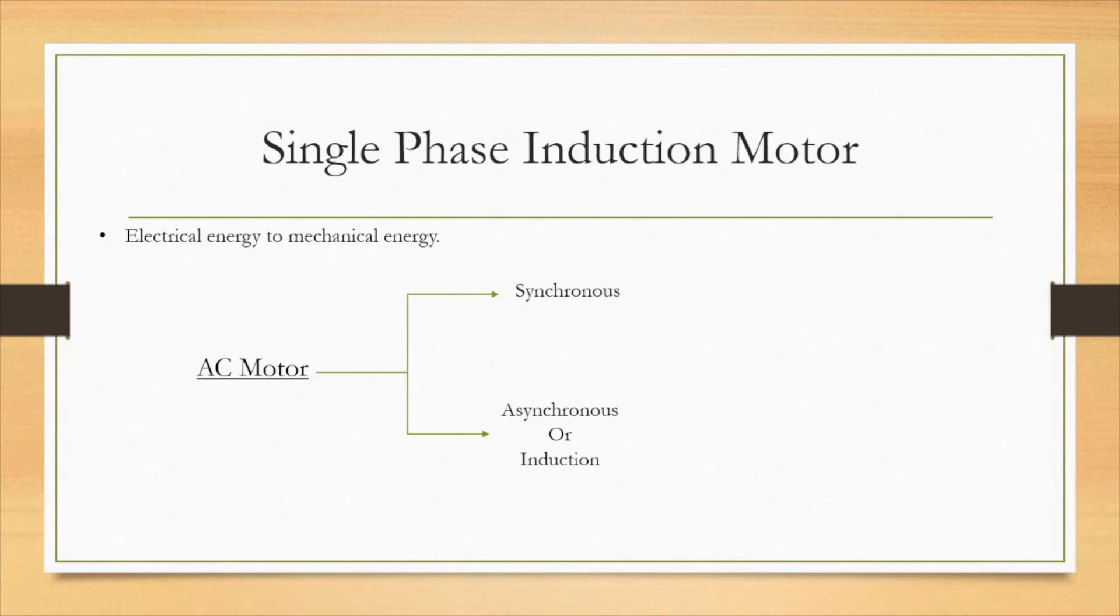In three phase induction motor, we have rotating flux. In a single phase induction motor, the flux is alternating in nature because we are applying a single phase supply. Due to the single phase supply we are applying to the stator winding, let phi m be the flux produced at the stator winding. Due to double revolving theory, this phi m may be split into two.